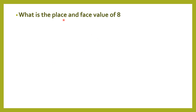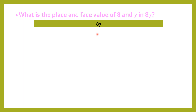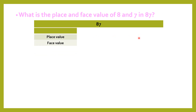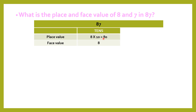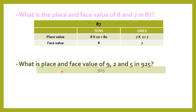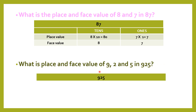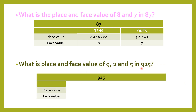Let's see place value and face value of 8 and 7 in 87 together. 8 is present at the tens position and 7 is present at the ones position. Place value of 8 is multiplied by 10, it becomes 80; and 7 multiplied by 1 remains 7. Face value is 8 and 7. Now coming to another example: place and face value of 9, 2 and 5 in 925.